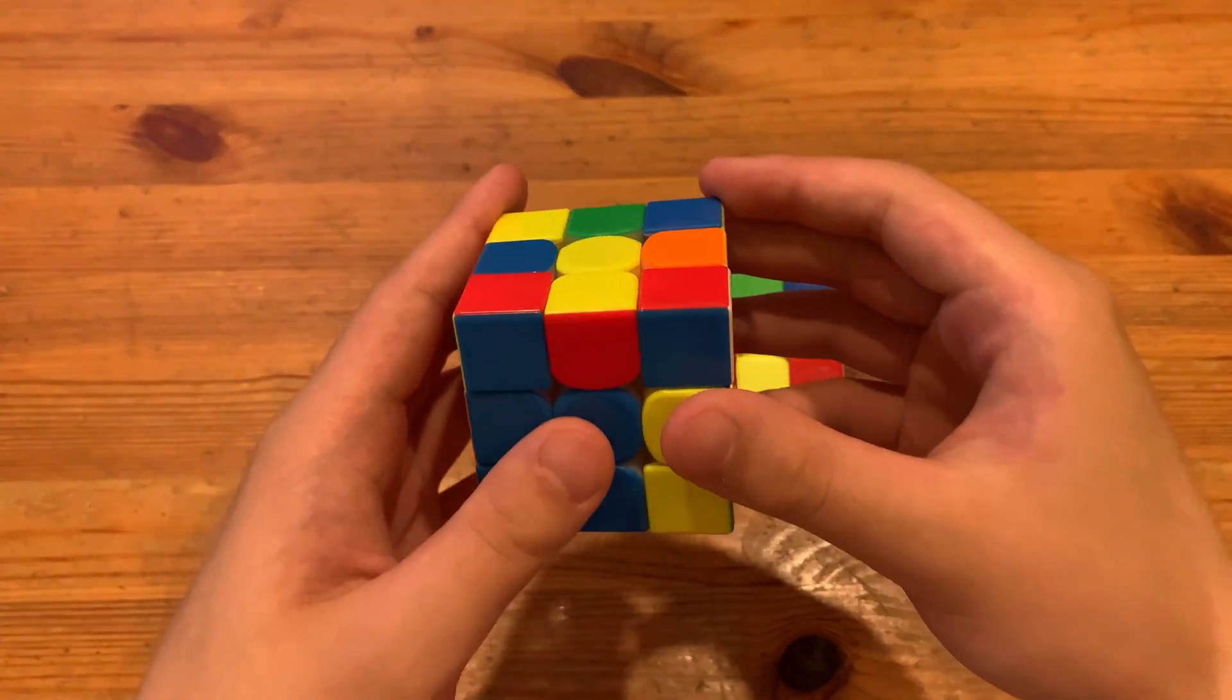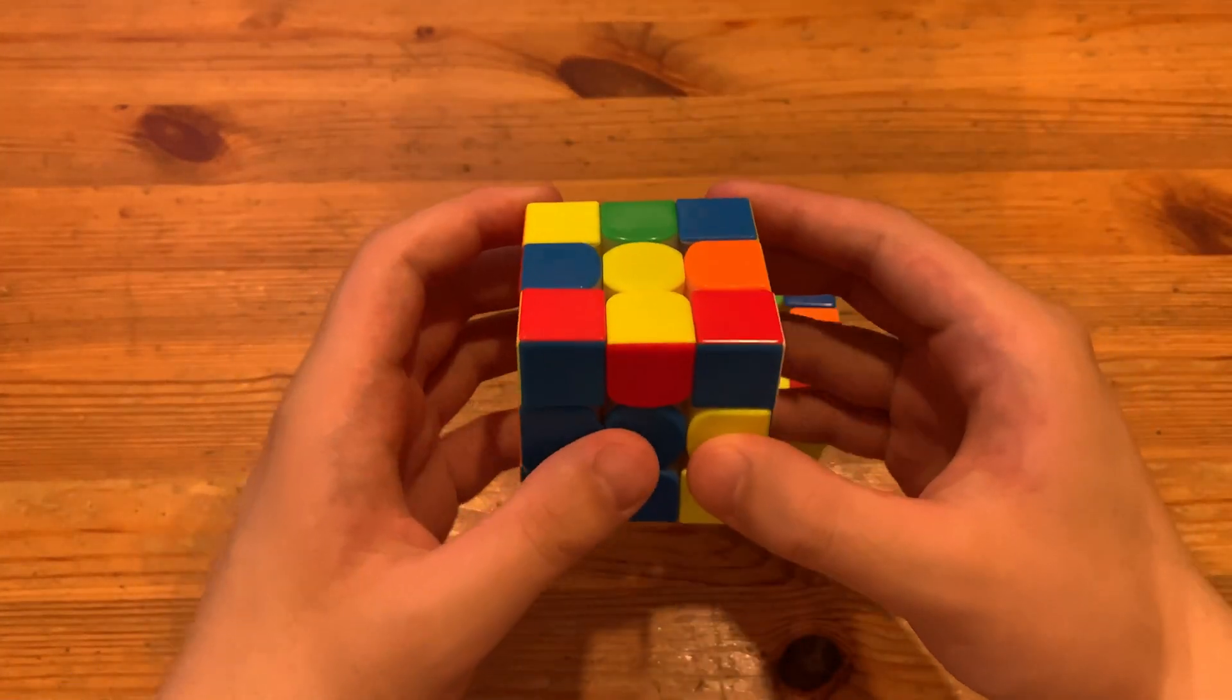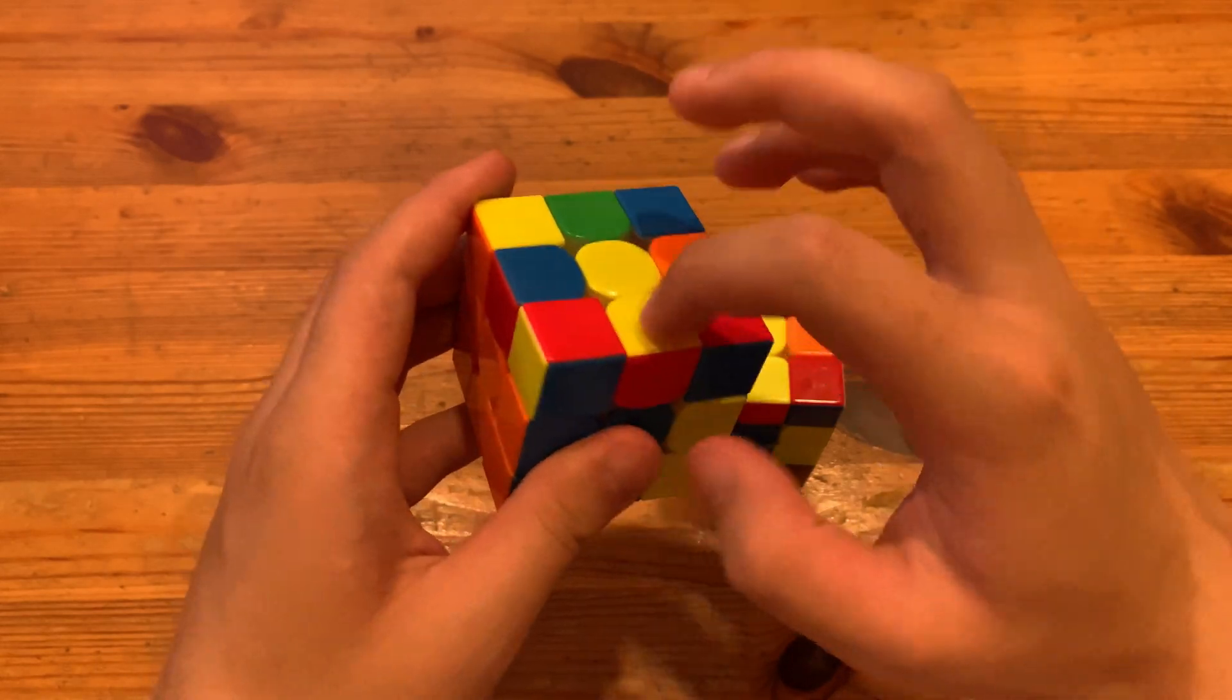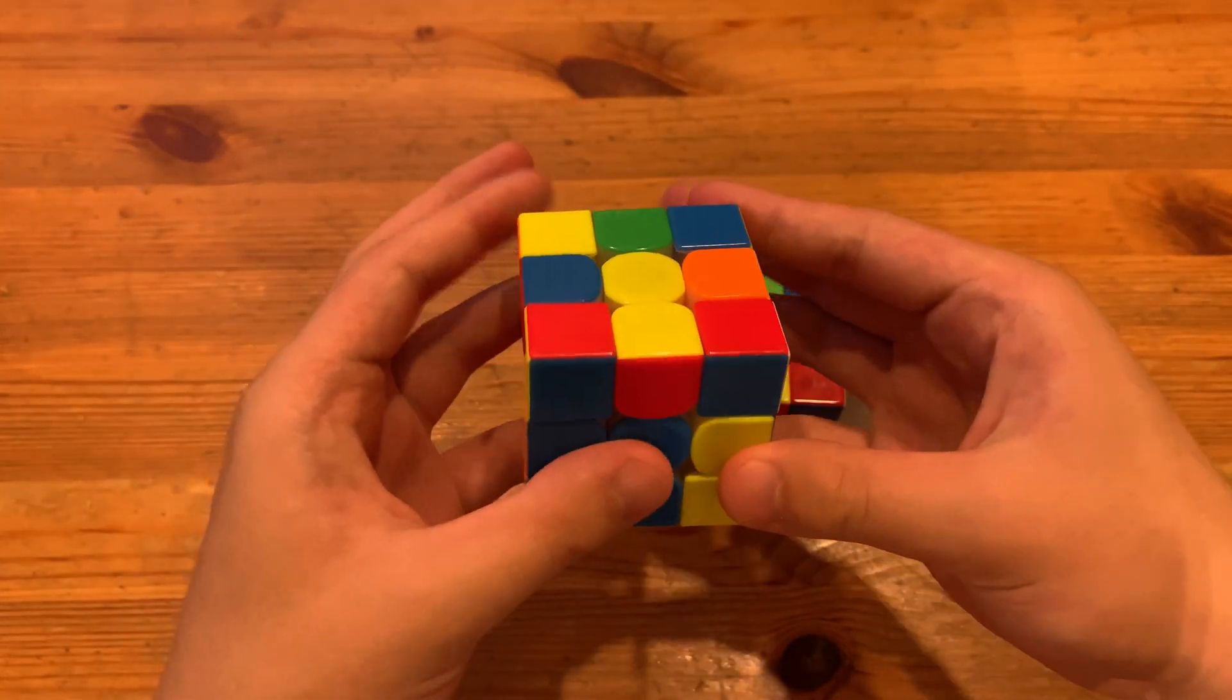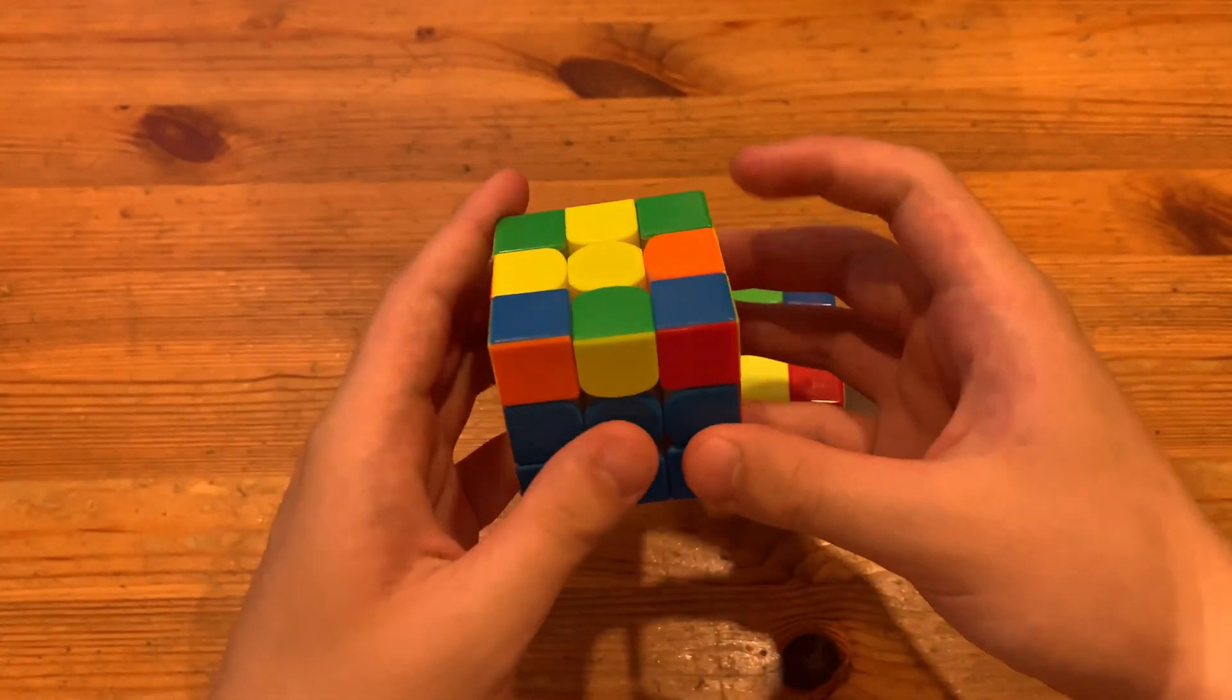What's up guys, this will be a super fast ZBLS for this F2L pair that I highly recommend. You have this edge oriented and that's how you recognize it, so normally you just do a U2 into that and you get two edges.